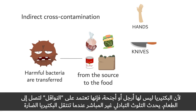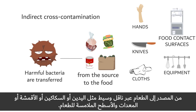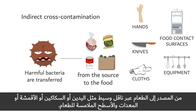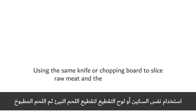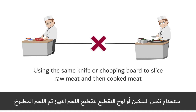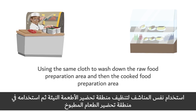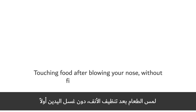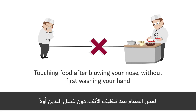Indirect cross-contamination occurs when harmful bacteria are transferred from the source to the food via a vehicle such as hands, knives, cloths, equipment, and food contact surfaces. Examples include using the same knife or chopping board to slice raw meat and then cooked meat, using the same cloth to wash down the raw food preparation area and then the cooked food preparation area, or touching food after blowing your nose without first washing your hands.